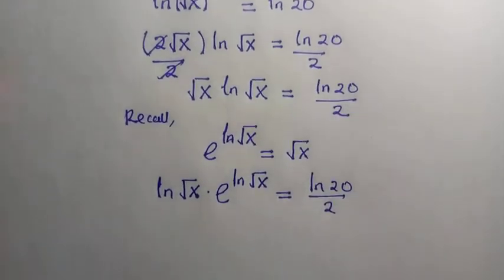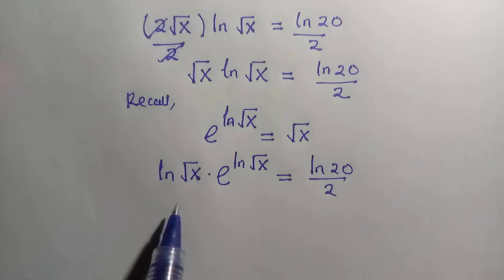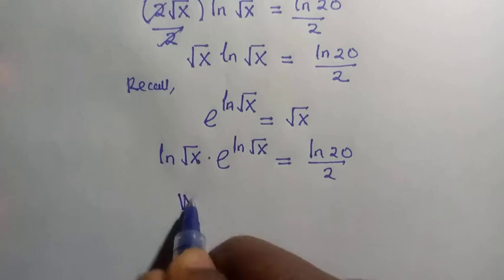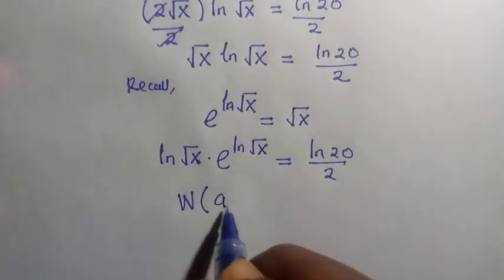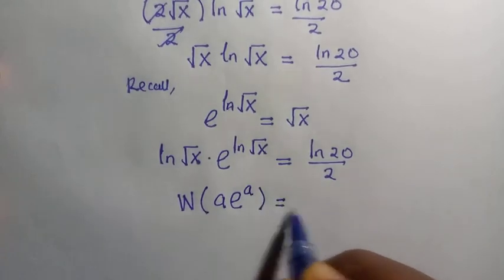So we have something of this form. What I mean by this is, I want to employ a particular function which we can make us get the value of root x. Suppose we have omega of a exponential of a, this is given as a.